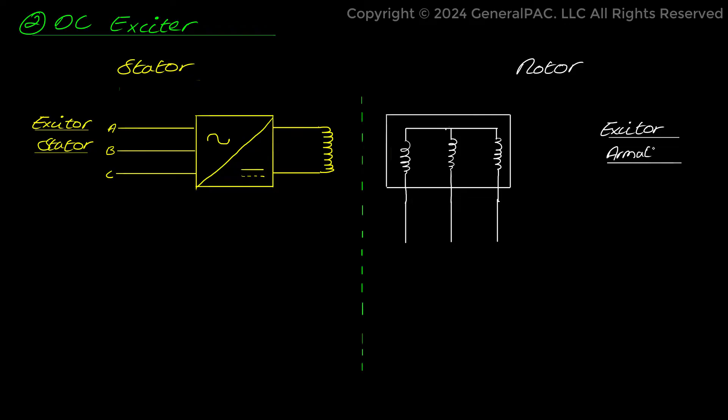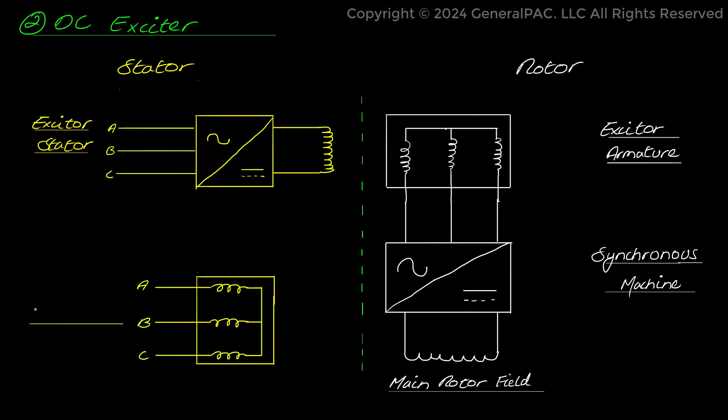Then AC output from exciter is subsequently rectified to DC and then supplied to the rotor field windings of main synchronous generator, which in turn induces three-phase AC voltage in stator windings of main synchronous generator.